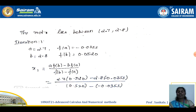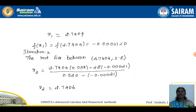For the first iteration, a = 2.7 and b = 2.8, with their corresponding function values already calculated. Applying the formula: x₁ = [2.7·f(2.8) − 2.8·f(2.7)] / [f(2.8) − f(2.7)] = [2.7·(0.0520) − 2.8·(−0.0353)] / [f(b) − f(a)]. Using a calculator, we get x₁ = 2.7404. We now check f(x₁) to determine the next a and b values.